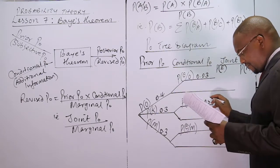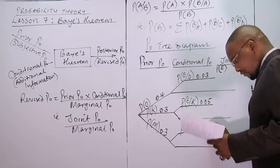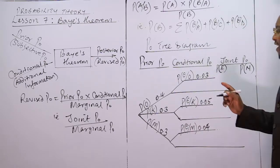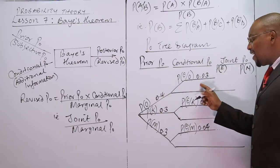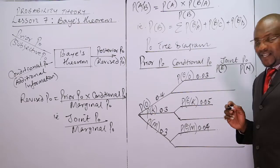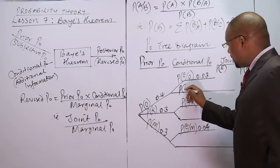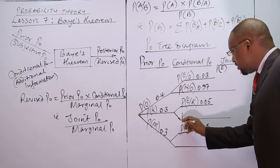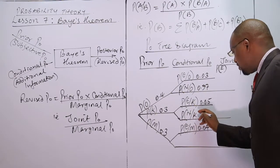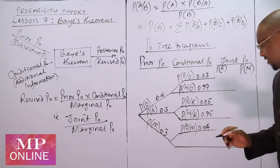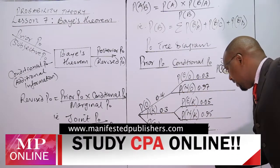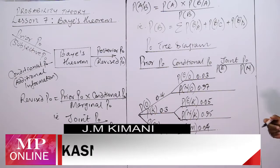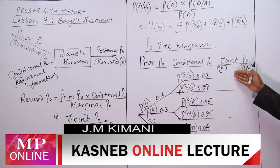The error rates given in the question are 3%, 5%, and 4%, so these are 0.03, 0.05, and 0.04 respectively. This means Othiambo's error rate is 3%, so the accounts with no errors constitute 97%. Therefore: probability of no error by Othiambo is 0.97, no error by Koech is 0.95, and no error by Moai is 0.96. The joint probability is the prior multiplied by the conditional probability.